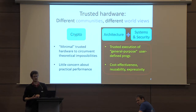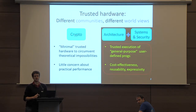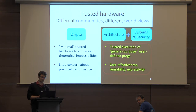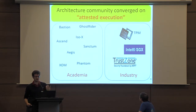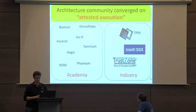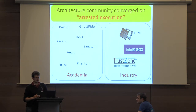On the other hand, in the architecture and system security community, the goal has been to view trusted hardware as a way of getting trusted execution of general purpose user programs, with a focus on the actual expressivity that the hardware gives you, and cost effectiveness and reusability for many different programs. It's interesting to see that various projects in this space, both in academia and industry, from the hardware and architecture community, have converged to this notion of attested execution.